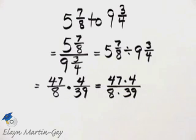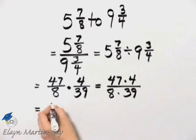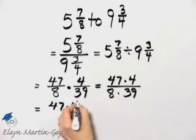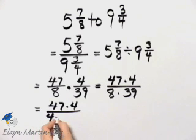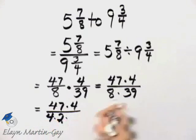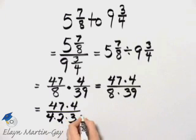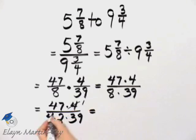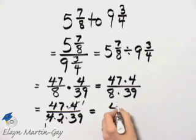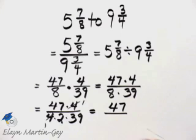Well, I know 4 and 8 have a common factor of 4. So let's go ahead and write this as 47 times 4, and then 8 I'll write as 4 times 2, and then I'll write my 39. Now we can see the common factor of 4, which we divide out. So in the numerator, I have 47 times 1, which is 47. In the denominator, 2 times 39, and 2 times 39 is 78.